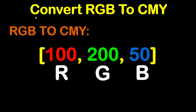In this tutorial, we are going to show a solid example on how to convert RGB, which is red, green, blue, to CMY, which is cyan, magenta, and yellow. So in this case, we have three components — red, green, blue — and we want to convert these three components to CMY. So let's see an example.